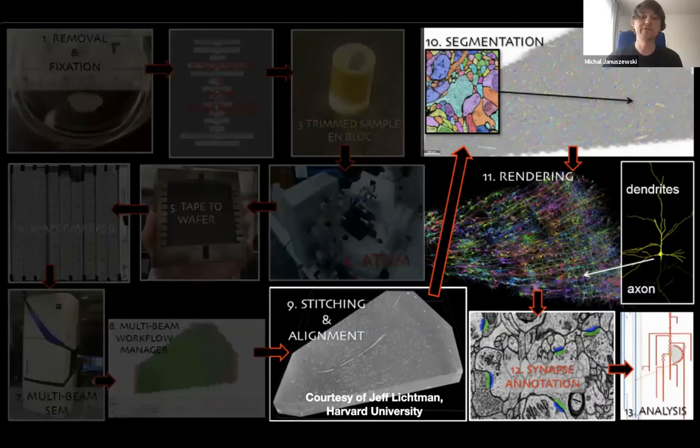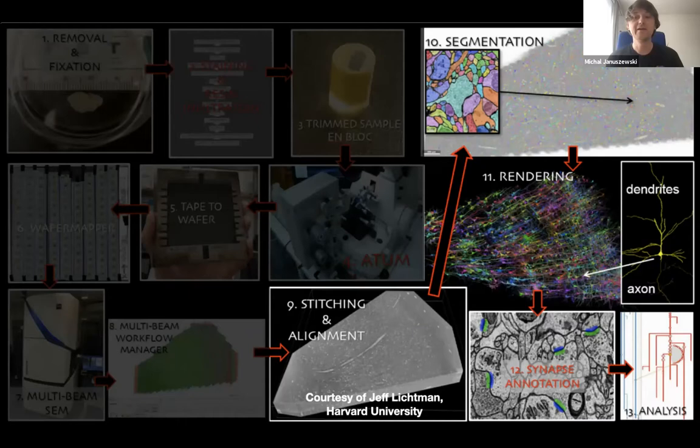Our task in the computational pipeline is to align and stitch those images into a three-dimensional volume, correct any irregularities, segment the neurons, detect the connections, and classify reconstructed objects into biologically meaningful categories like axons and dendrites. At the end of the pipeline, we hope to get a rich neural wiring diagram of the dataset, which collaborators and the wider research community can use to build, verify, and refine scientific models of how brains operate.